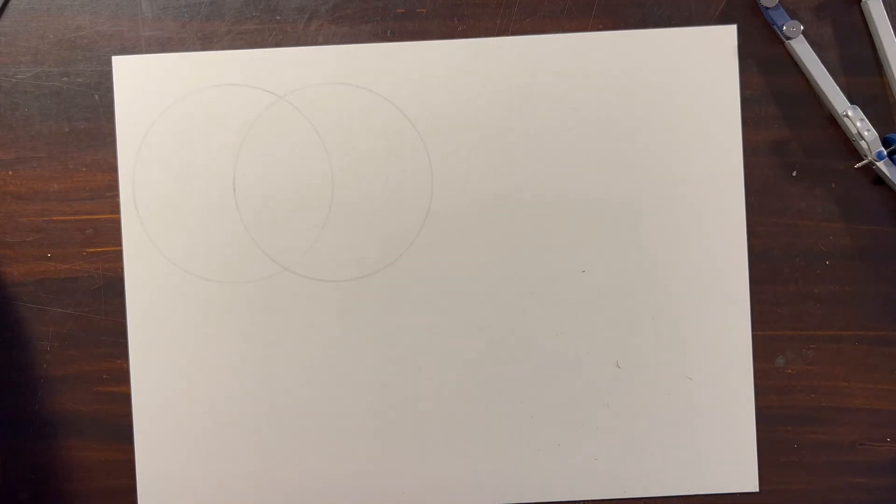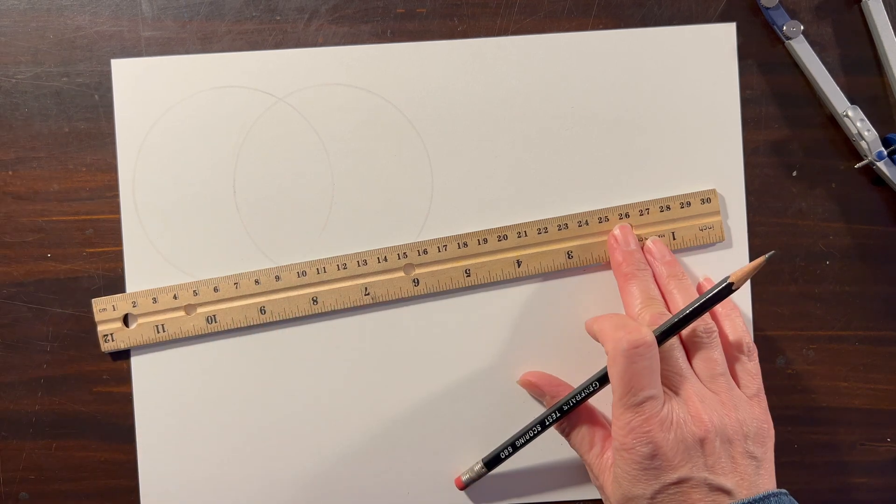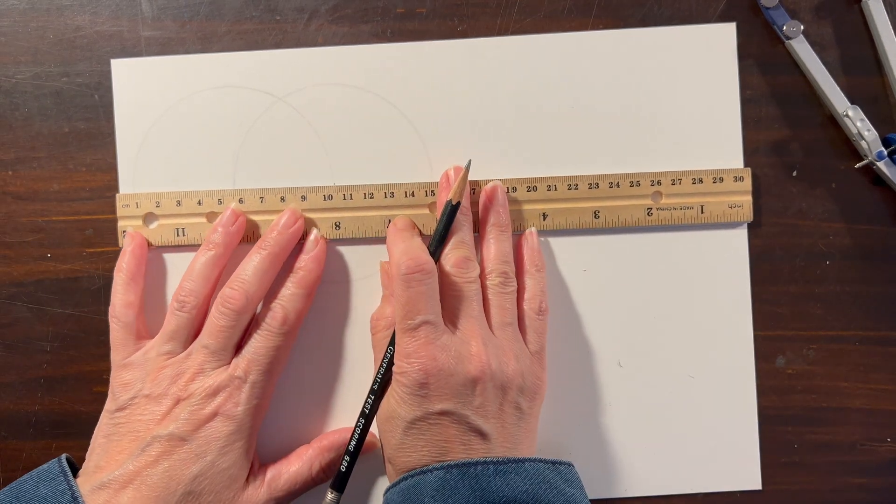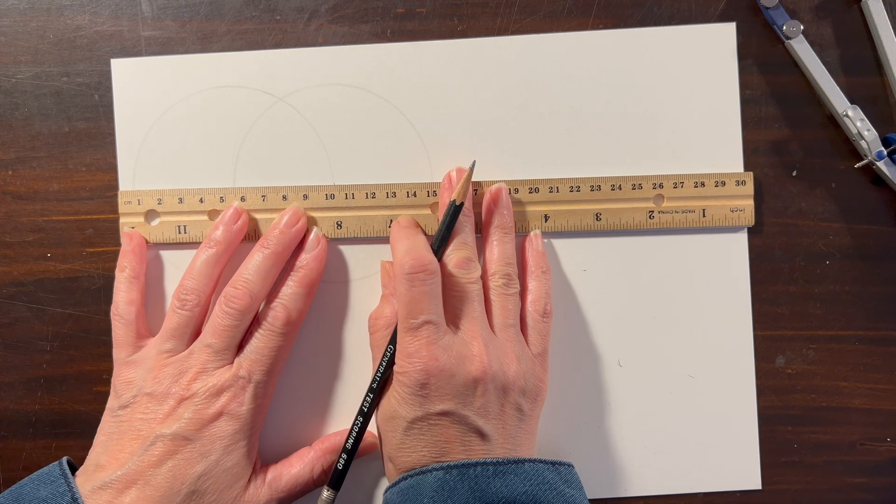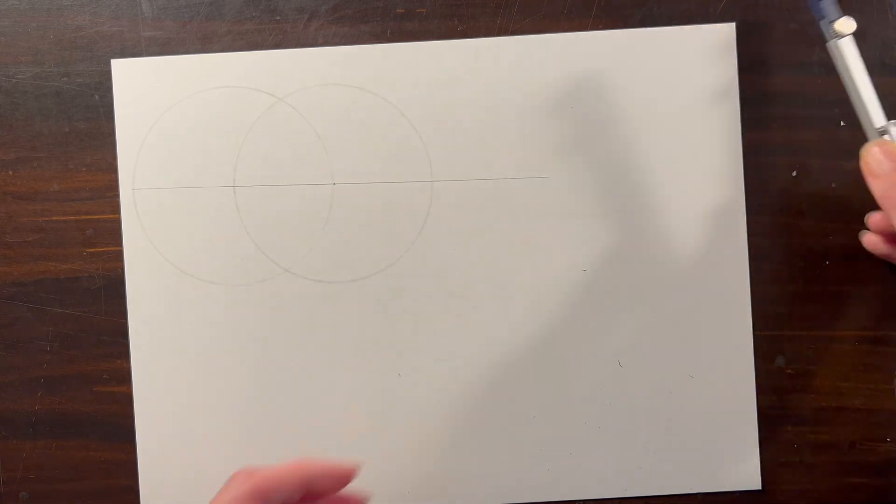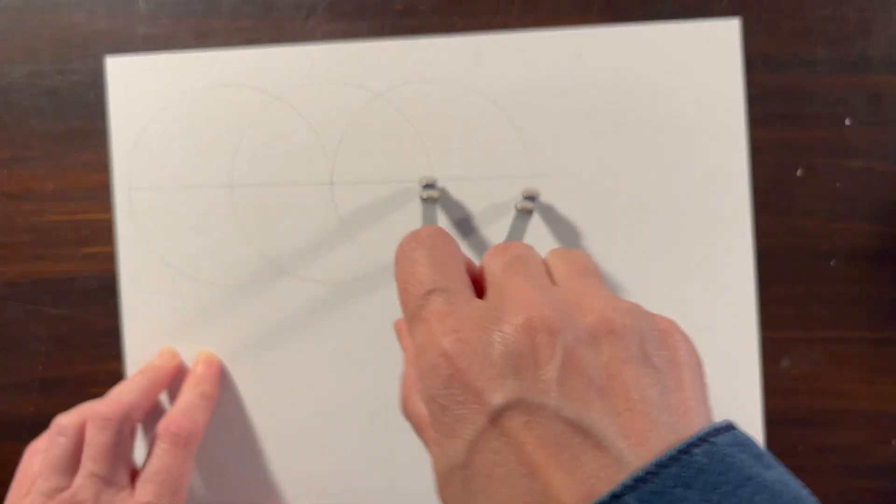At this point you'll see two centers of the circle and you want to use your straight edge to connect those two points and then extend the line all the way to the right. Where that line crosses the circumference on the second circle, we're going to place our compass and draw our third circle.